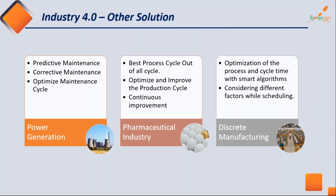For power generation, because it has a continuous cycle of generating power, predictive and corrective maintenance become most important — you can't bring the system down for even a couple of days. For the pharmaceutical industry, we can find the best process cycle out of all cycles — in domain terms, this is known as a 'golden batch.' We can present the best lot in terms of quality and time produced.